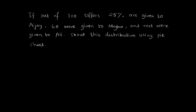We have an interesting problem here. What we have to do is draw a pie chart from the given information. Out of 100 toffees, 25% are given to Ajay, 60 were given to Megha, and the rest were given to Ali. We need to show this distribution using a pie chart.